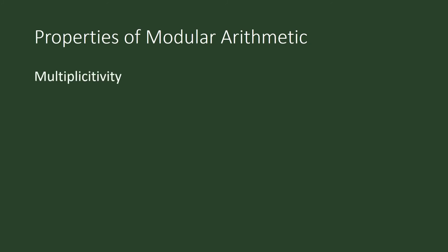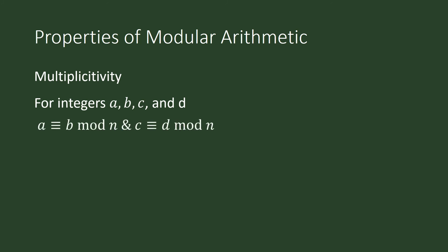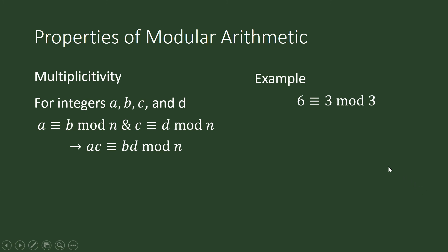Multiplicity: comparable to the multiplication property of equality. For integers a, b, c, and d, if a is congruent to b mod n and c is congruent to d mod n, then a times c is congruent to b times d mod n. Using the same examples, we already know 6 is congruent to 3 mod 3, and 12 is congruent to negative 3 mod 3, so we will obtain the product of the respective terms.